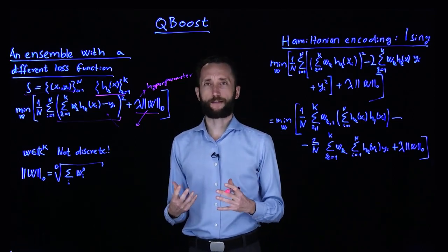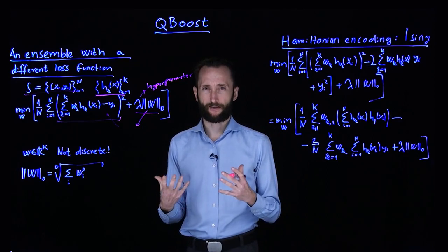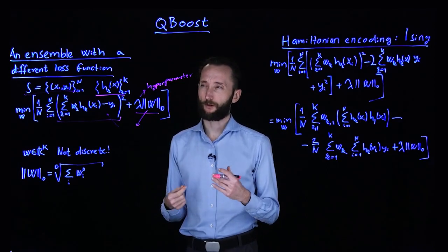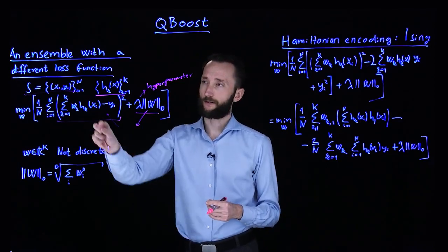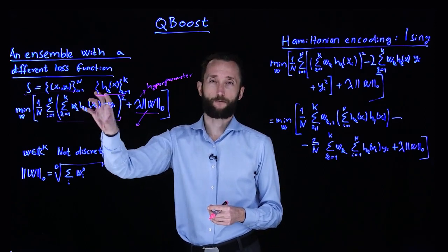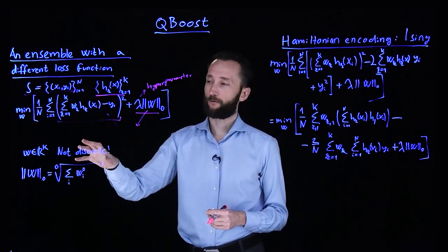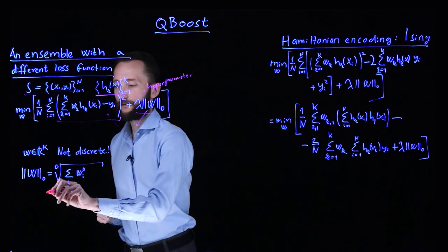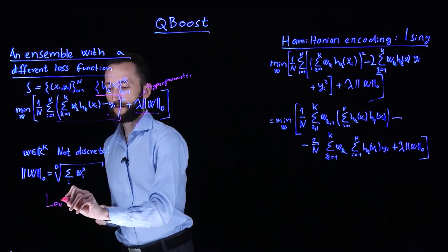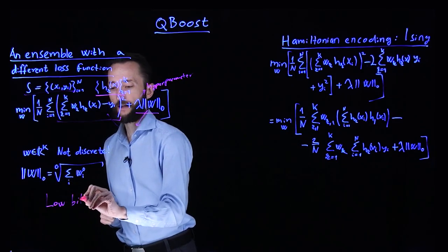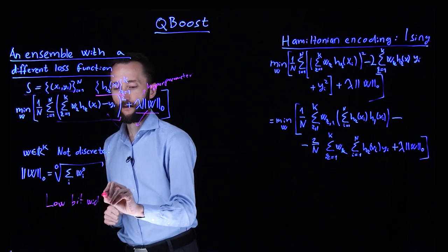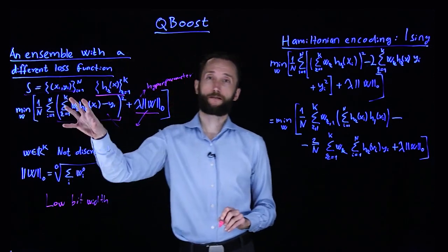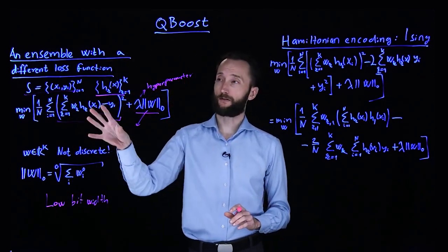So in principle, these w weights are not discrete. So we still talk about real values. But what really matters is the relative importance and whether they are included. So we can reduce the bit width. We can use just say three bits to represent a weight. And now we have a discrete problem.